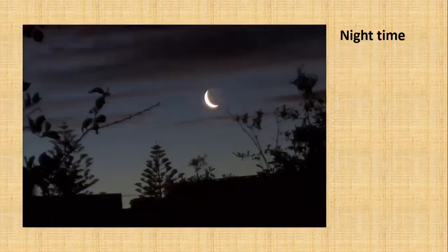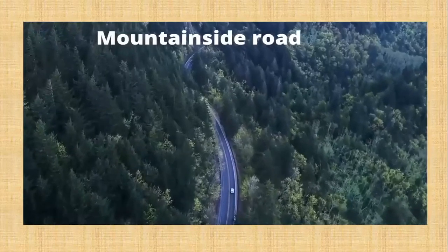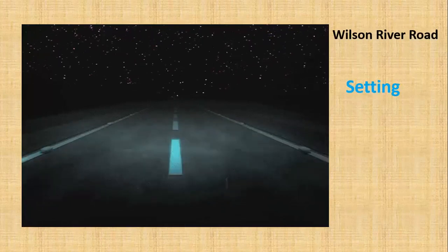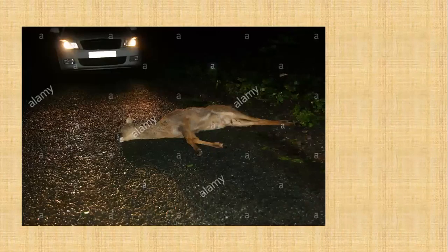To begin with, this poem takes place at night time. The speaker is driving his car along the road by the mountainside. He is driving his car along the road which is called Wilson River Road. While driving the car, in his headlight he sees something. This is a dead deer lying on the road.